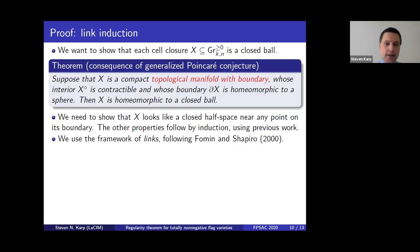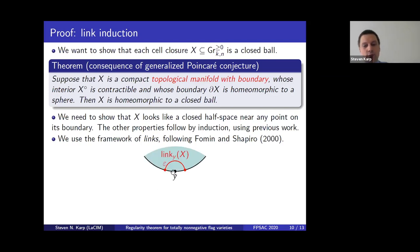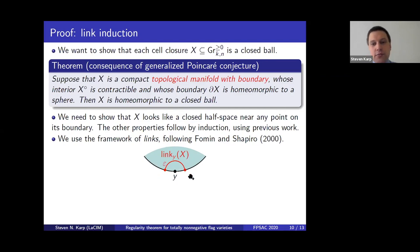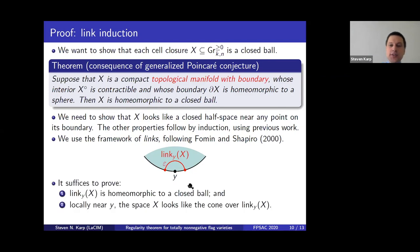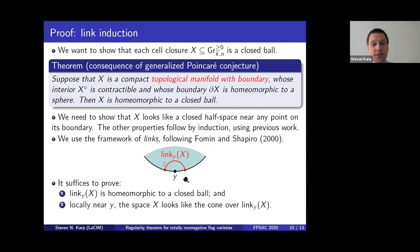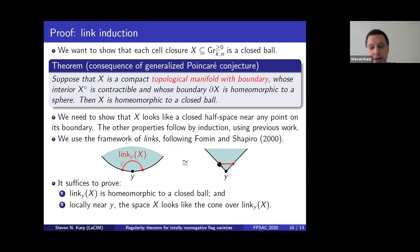Our strategy follows an idea of Fomin and Shapiro involving links. Given a point y on the boundary of X, we take a small sphere centered at y and intersect it with X — that gives us the link. We want to know that locally X looks like a half space, so we check two properties: first, the link itself is homeomorphic to a closed ball; second, locally around y the picture looks like the cone over the link. A cone over a closed ball looks like a half space, so then we're done.